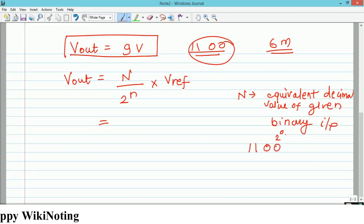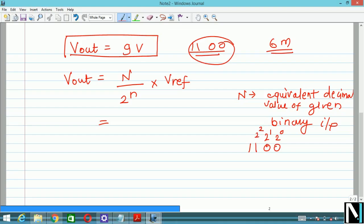The value is 1100. Always keep in mind this is 2 raise to 0, this is 2 raise to 1, this is 2 raise to 2, and this is 2 raise to 3. So this bit is 1, that means your value will become 1 multiplied by 2 raise to 3 plus 1 multiplied by 2 raise to 2 plus 0 multiplied by 2 raise to 1 plus 0 multiplied by 2 raise to 0. It will become 8 plus 4 plus 0 plus 0, so this value is nothing but 12 in terms of decimal.